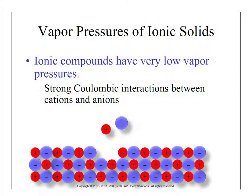If you think ice has a low vapor pressure, consider ionic solids — those have really strong intermolecular forces, so their vapor pressures are going to be extremely, extremely low. If you want to turn ionic solids into a gas, you've got to give them a lot of energy.